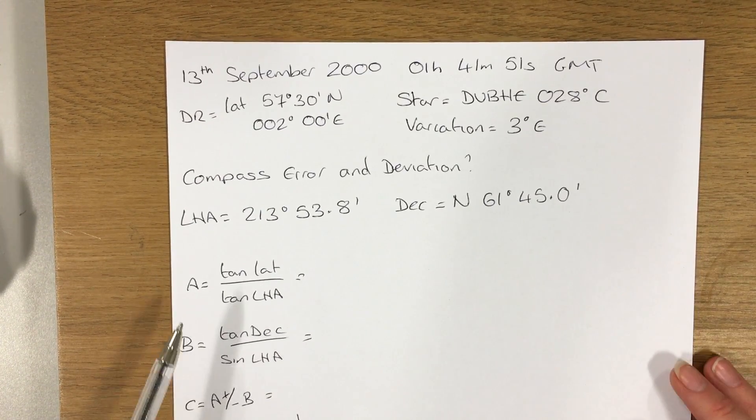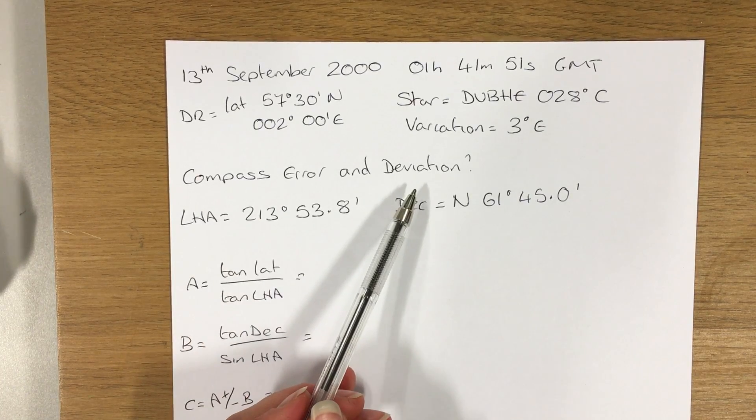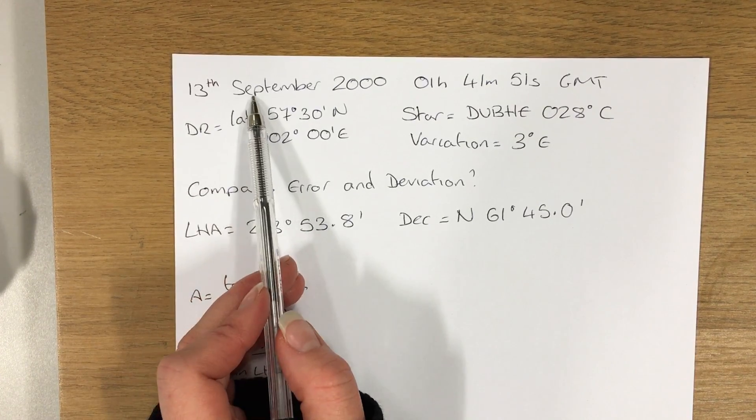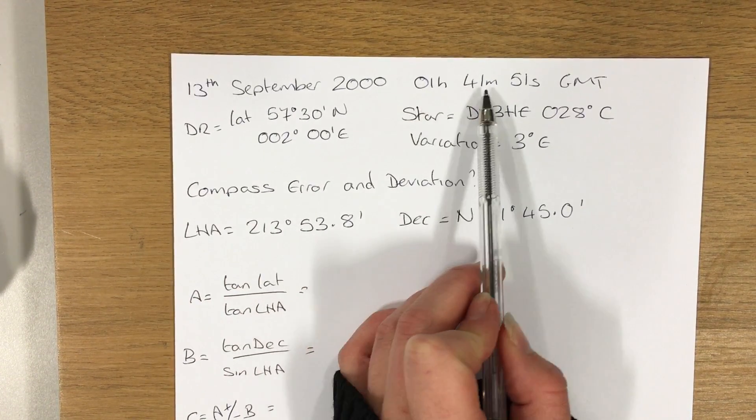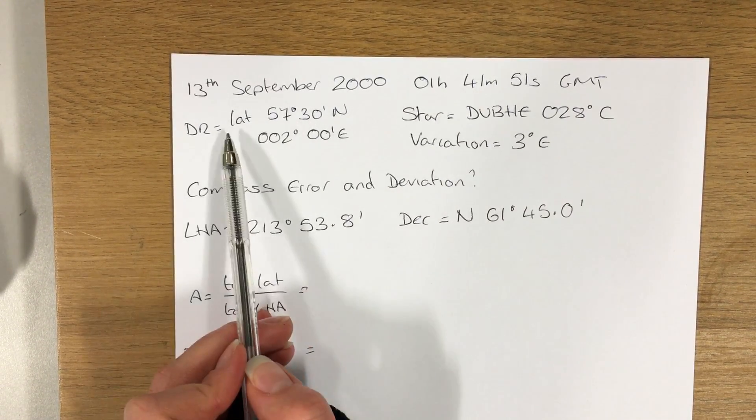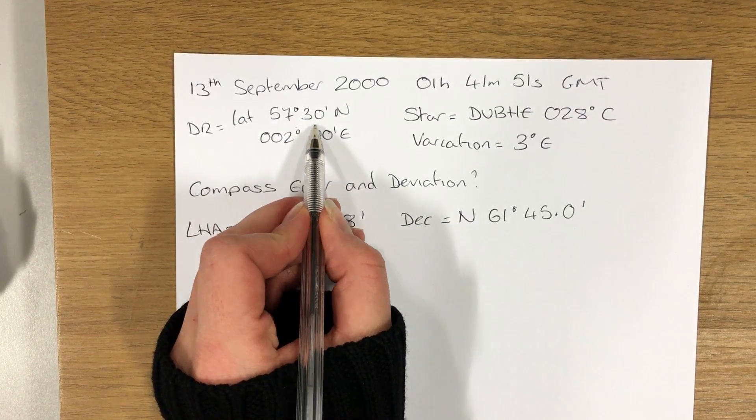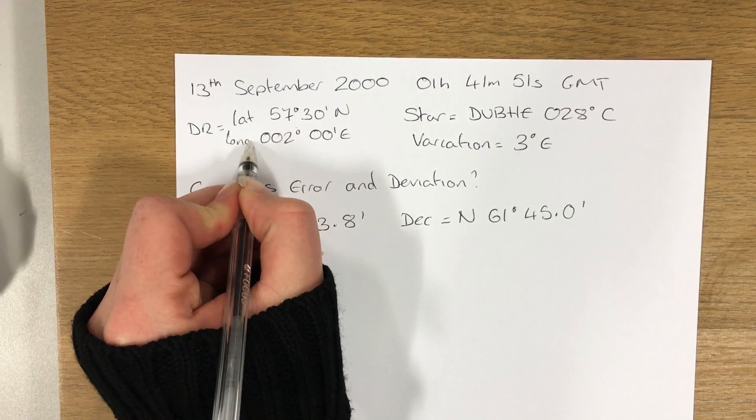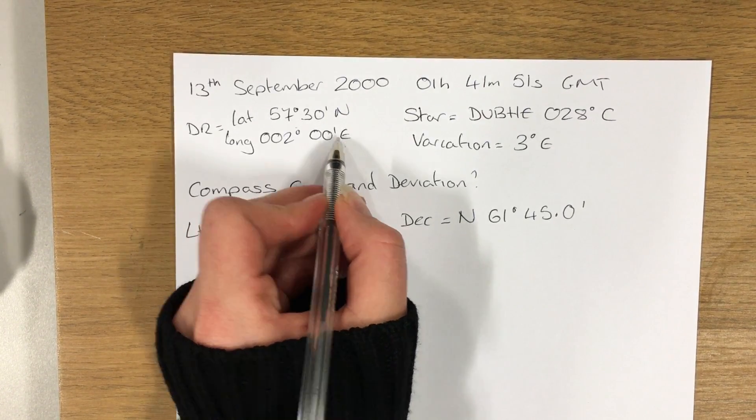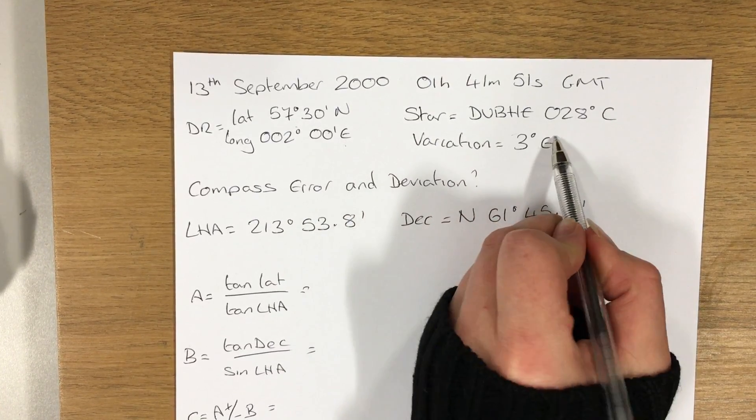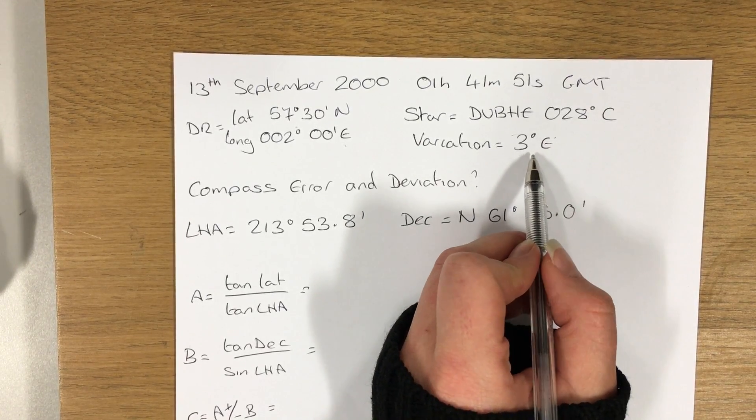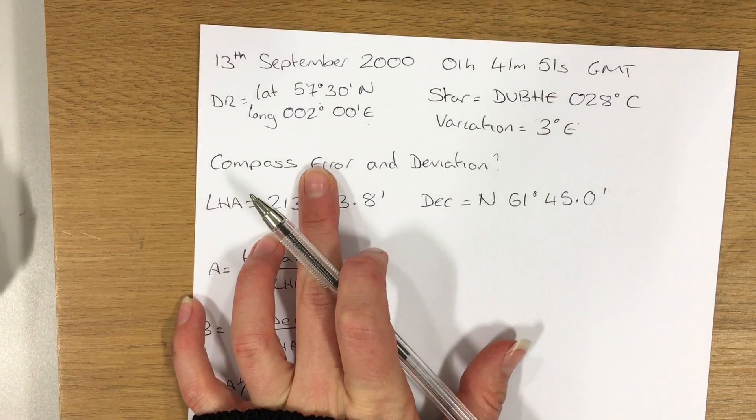This is a video tutorial on finding the compass error and deviation through the azimuth method. The question gives me a date of the 13th of September and a GMT time of 01:41:51. The DR latitude is 57 degrees 30 minutes north, longitude 002 degrees 0 minutes east. I'm given the star that I'm looking at and the compass bearing of 028 degrees.